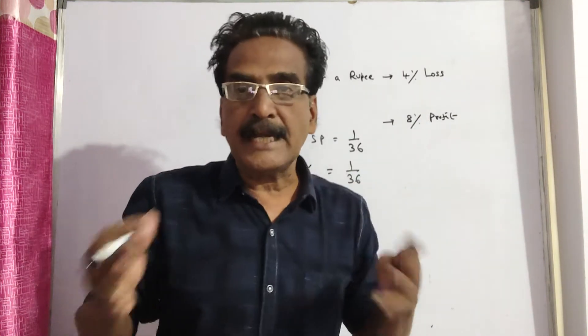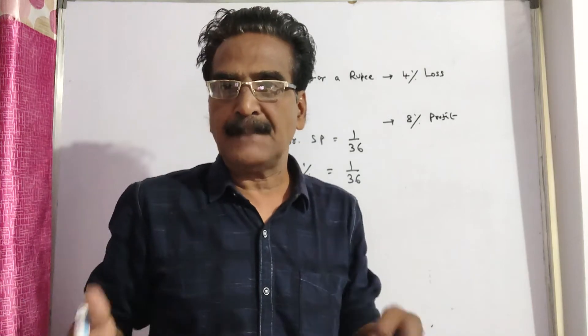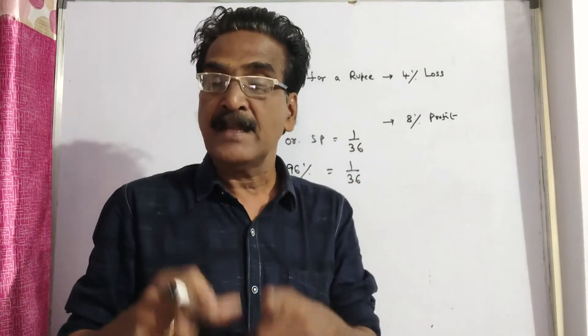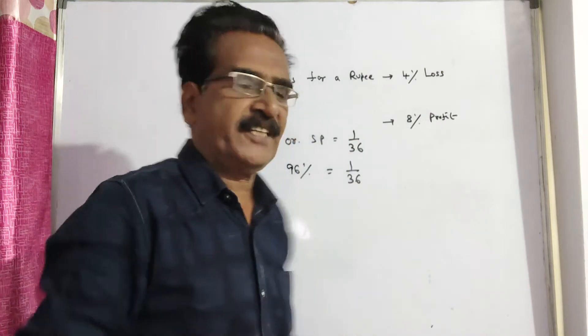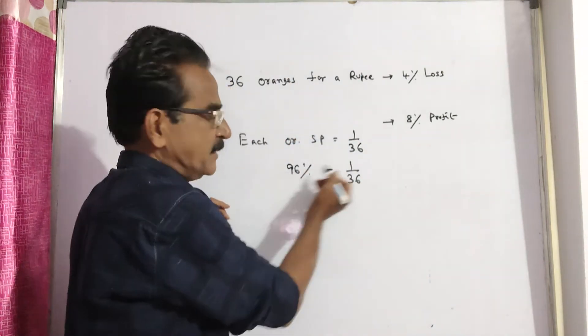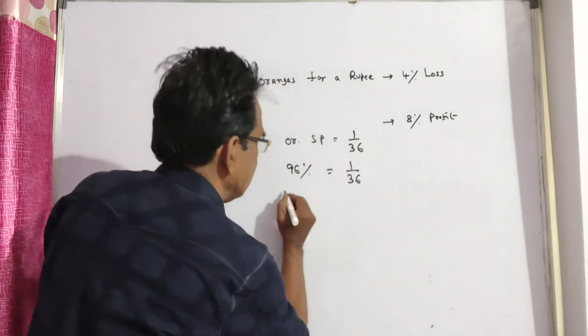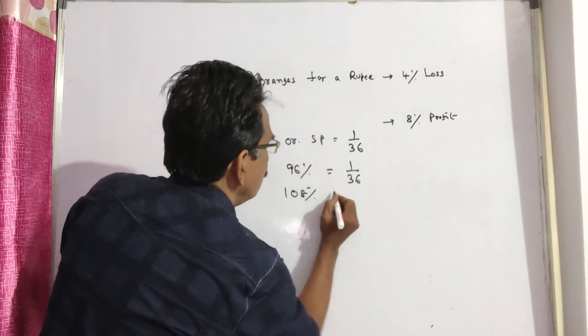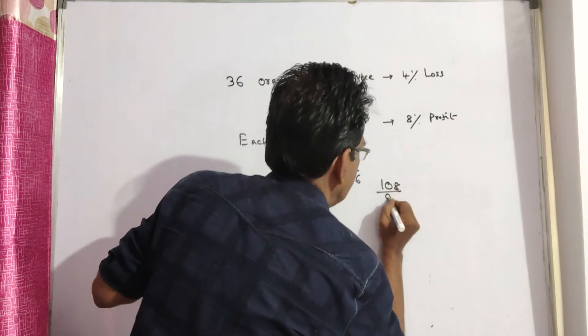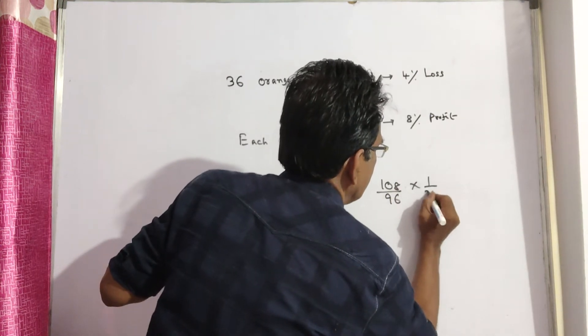Now we want 8% profit. So we have to sell each orange at 108% of the cost price. 96% is equal to 1 by 36. What is 108%? 108 by 96 into 1 by 36.